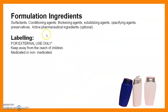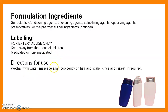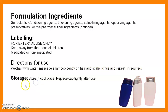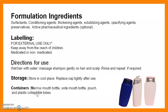The formulation ingredients of shampoo include: surfactant, conditioning agent, thickening agent, solubilizing agent, opacifying agent, preservatives, and an active pharmaceutical ingredient (optional). The label should include secondary label text: for external use only, keep away from the reach of children, and whether it is medicated or non-medicated. Direction for use: wet the hair with water, massage shampoo gently on hair and scalp, rinse and repeat if required. Store in a cool place and replace the cap tightly after use. Containers: narrow mouth bottle, wide mouth bottle, pouch, and plastic collapsible tubes.